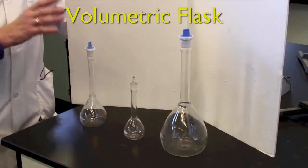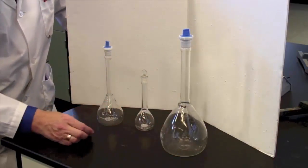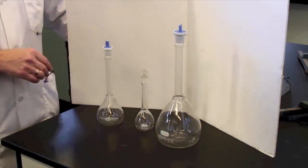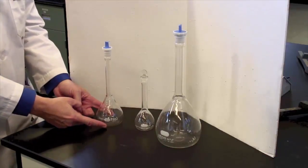You need to have particular pieces of equipment that are made for volumetric analysis. For containing accurately known volumes, we have volumetric flasks. And we've got three different sizes: 100, 250, and a liter. They come in many different sizes.